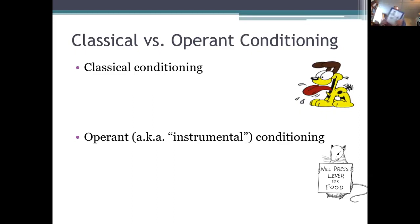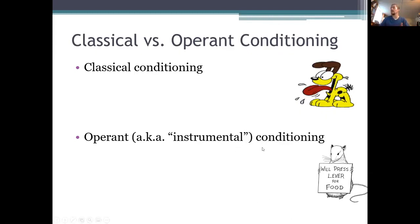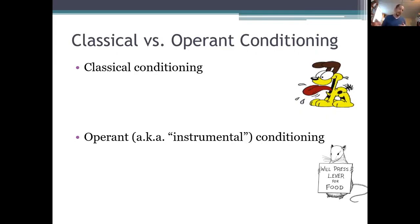Your textbook author uses the term operant learning for this, which isn't wrong, but the type of learning he's describing is really much more commonly referred to as operant conditioning, because it does involve learning to associate things. And that's what conditioning is in psychology — it's an associative form of learning, a process that involves learning to associate things. We do learn to associate things in operant conditioning too.